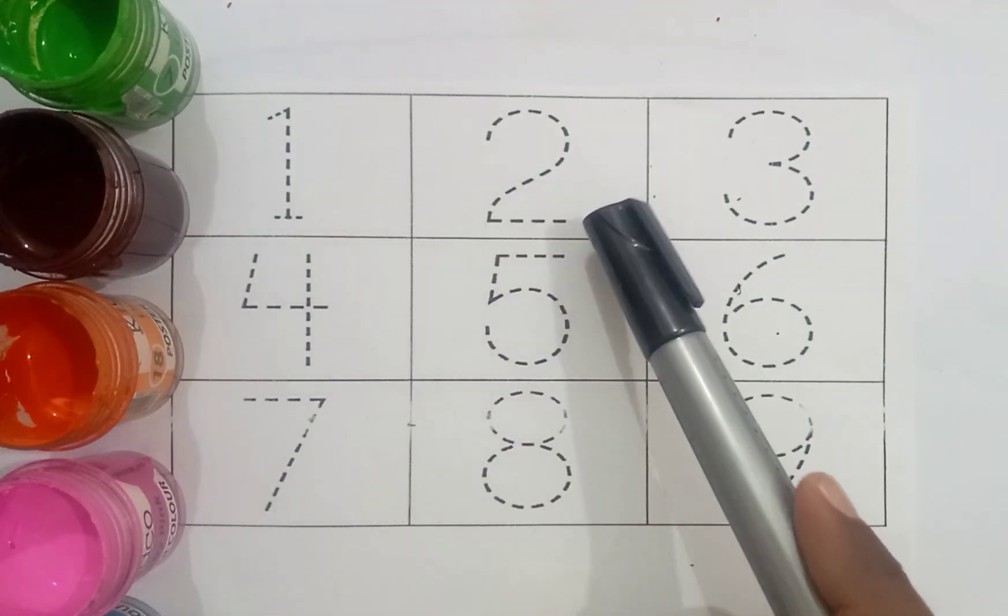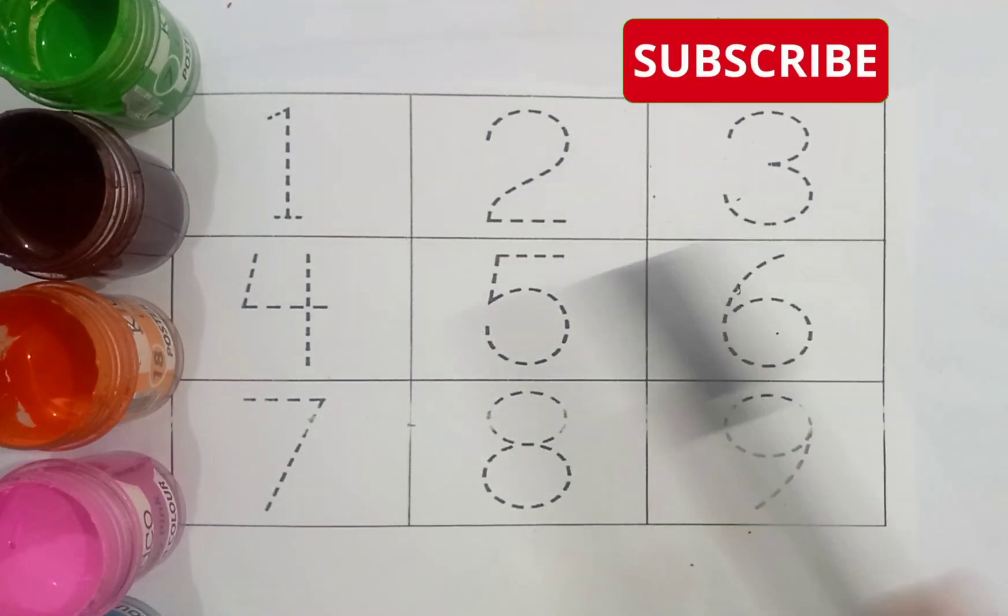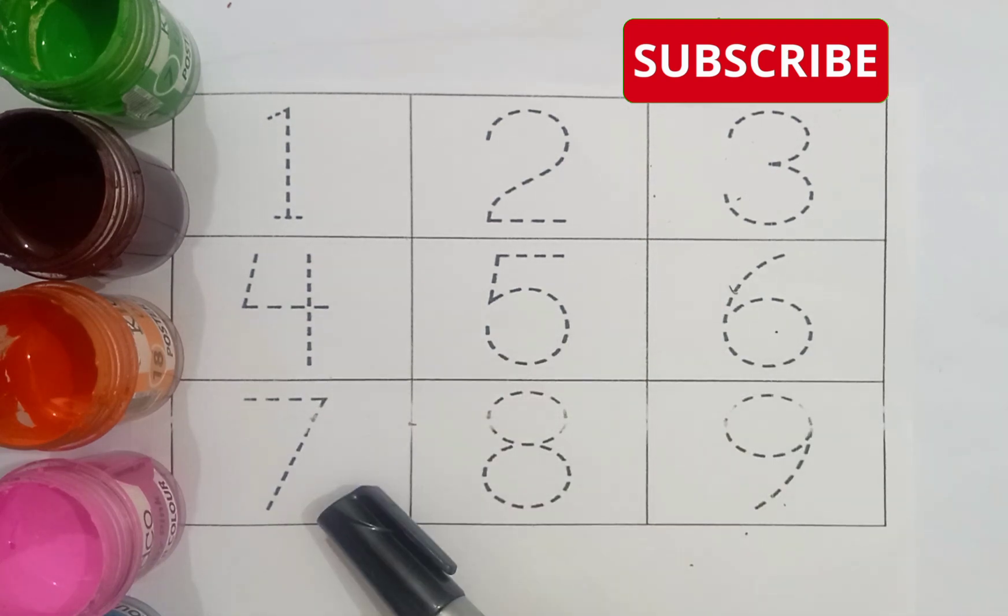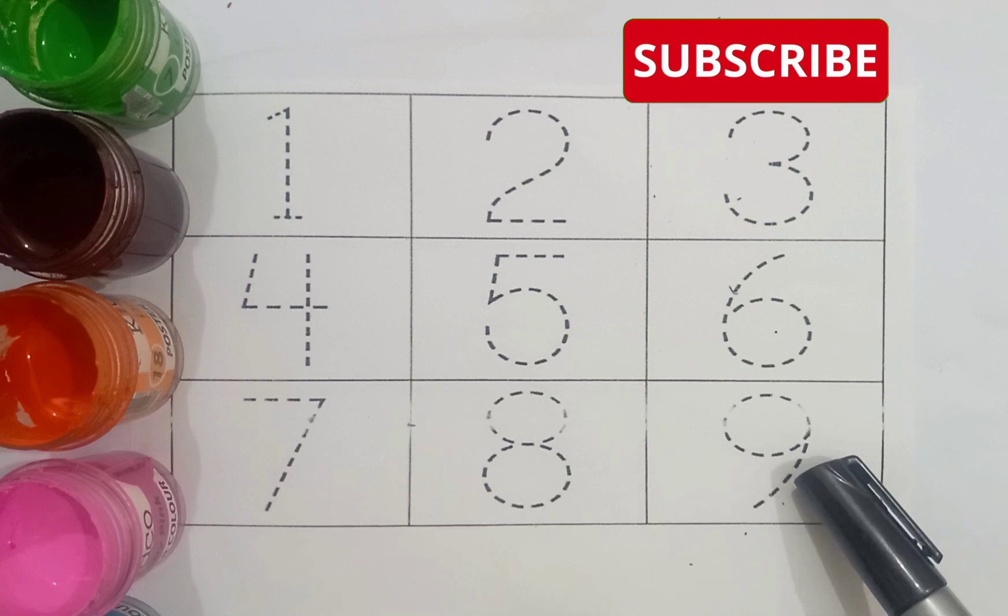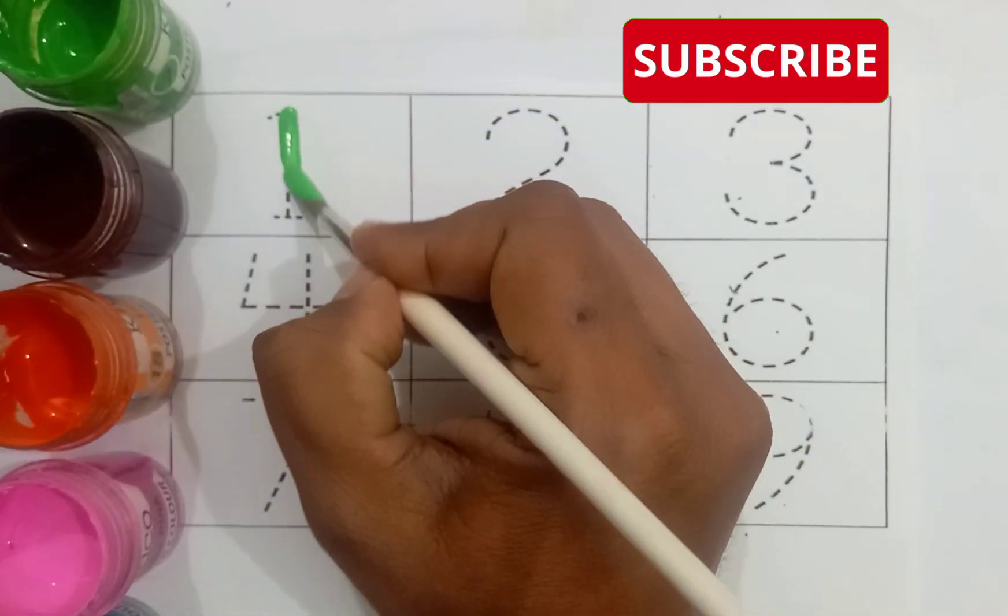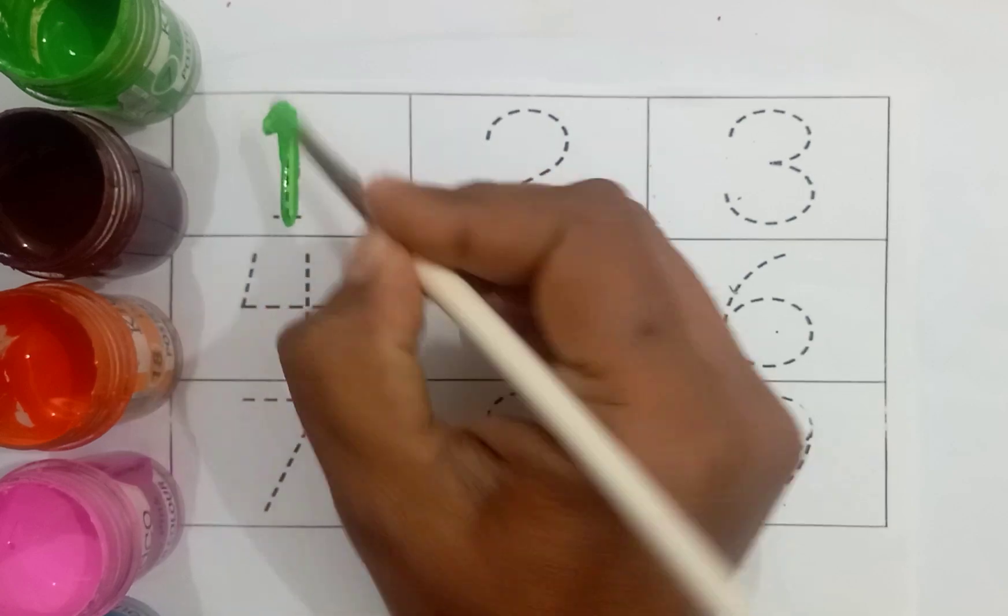One, two, three, four, five, six, seven, eight, and nine. Let's start. Green color one.